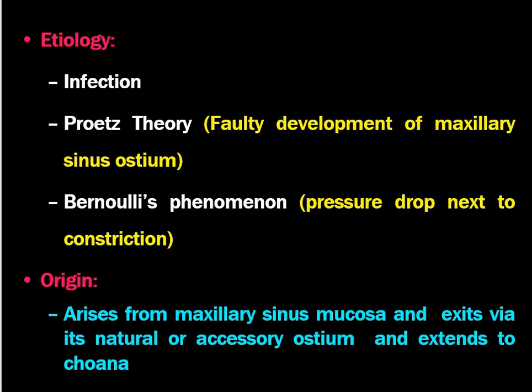The origin of the antrochoanal polyp is that it arises from the maxillary sinus mucosa, from the maxillary antrum, and exits by the natural or accessory ostium and extends to the choana. Commonly it comes out through the accessory ostium.